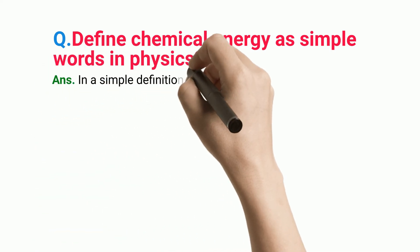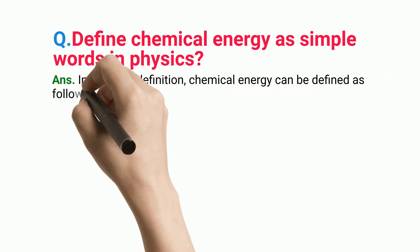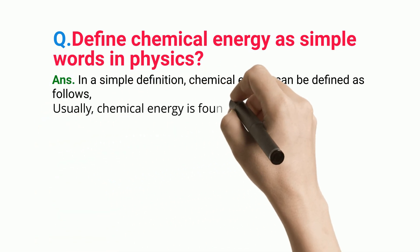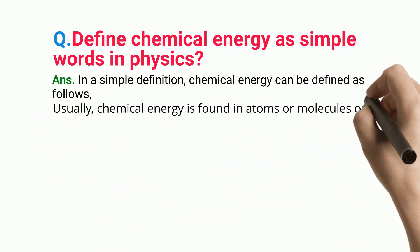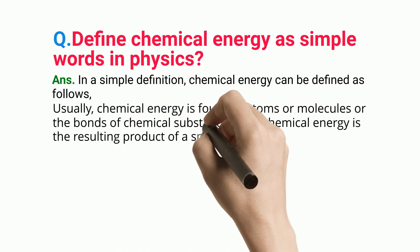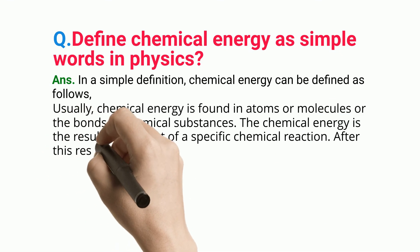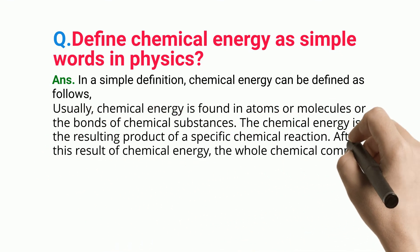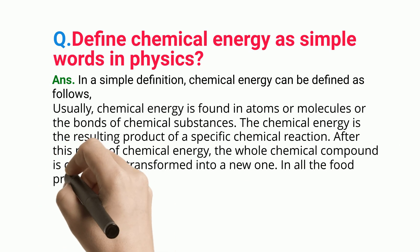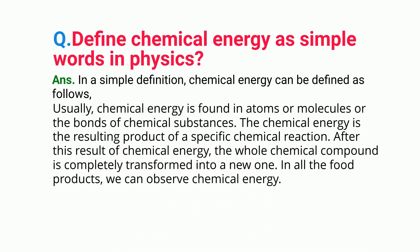In a simple definition, chemical energy can be defined as follows. Chemical energy is found in atoms, molecules, or the bonds of chemical substances. The chemical energy is the resulting product of a specific chemical reaction. After this result of chemical energy, the whole chemical compound is completely transformed into a new one. In all food products, we can observe chemical energy.